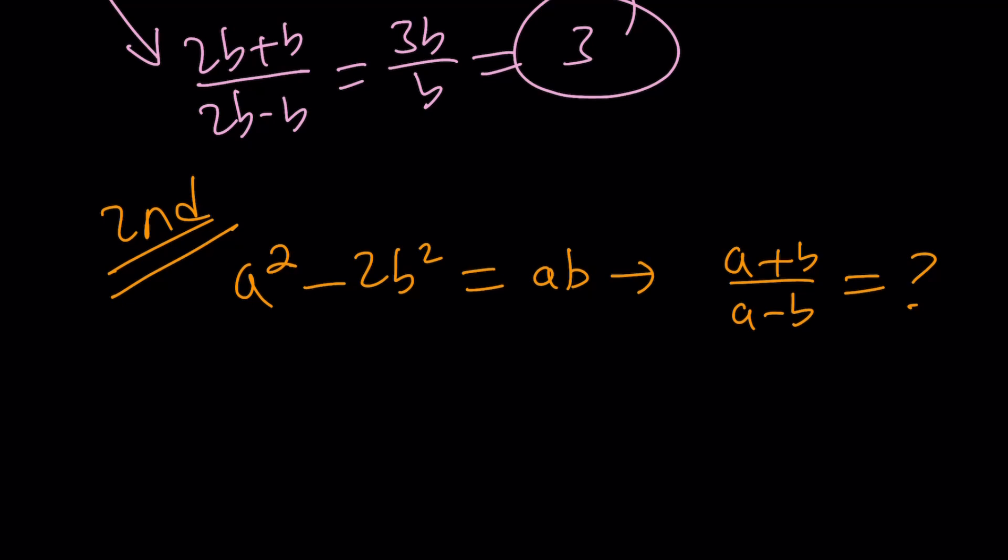Let me tell you why that is important. If you divide everything by b here, you get a over b plus 1 divided by a over b minus 1. So if I know a over b, then I can find this very easily. But how do you find a over b from here? Easy. You change the variables.